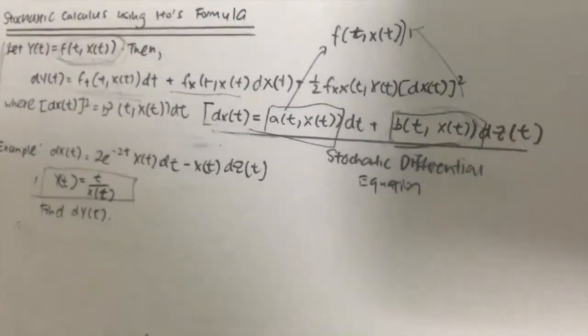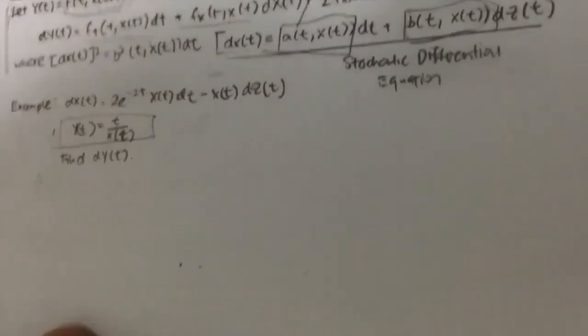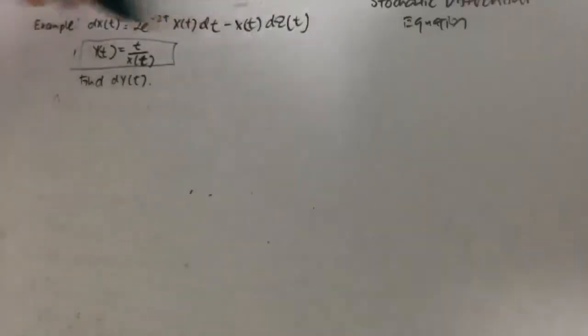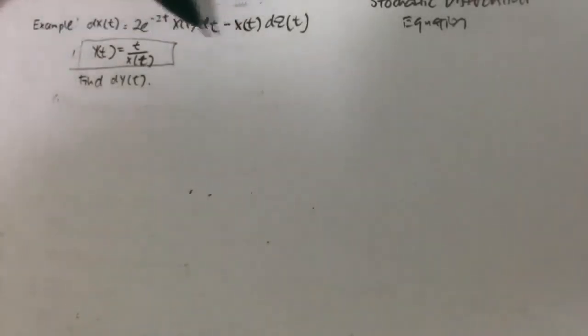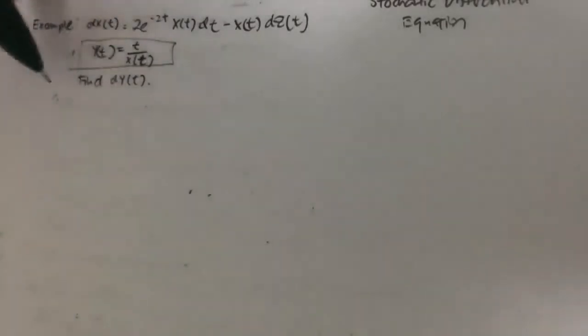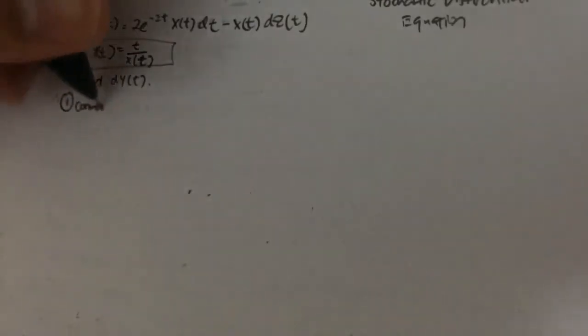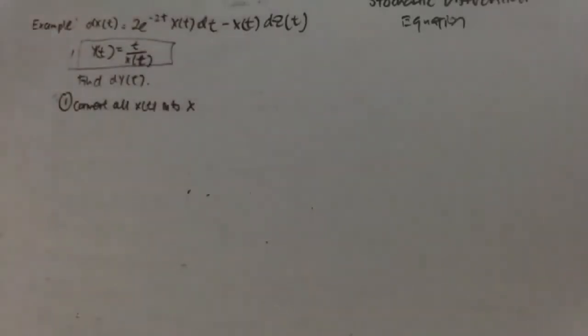So how do we apply Ito's formula to solve problems? We have a problem below: this is a stochastic differential equation of xt, this is yt, and you are asked to find dyt. The first thing you need to do is to convert all xt into x. In this case you will use yt equal to t over x.